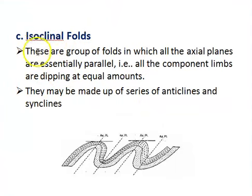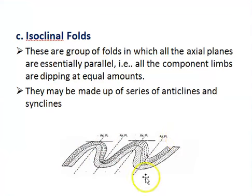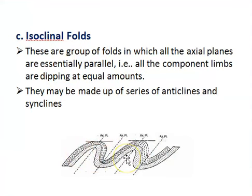The third type is isoclinal folds. These are a group of folds in which the axial planes are essentially parallel, as shown in the diagram. The limbs dip at equal angles, and they are made up of a series of anticlines and synclines. These are called isoclinal folds.